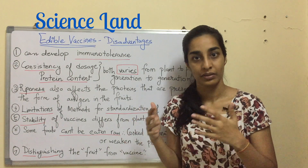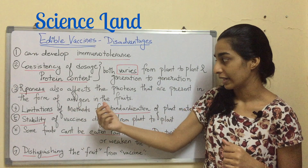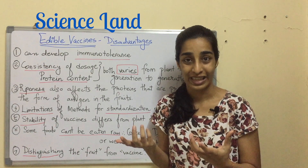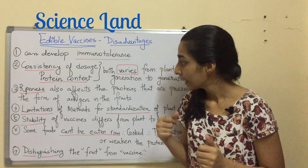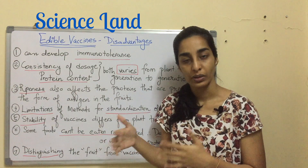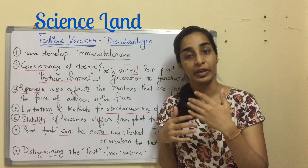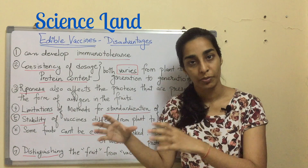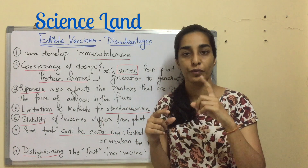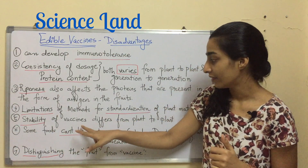Third, the ripeness of fruit affects the protein present as antigen — since fruits ripen quickly, ripeness can change the effectiveness of the vaccine. Fourth, there are limitations in standardization of plant materials; because different plant materials are used, different protocols are needed for each plant type, making one universal standard protocol impossible. Fifth, the stability of the vaccine also differs from plant to plant and generation to generation.